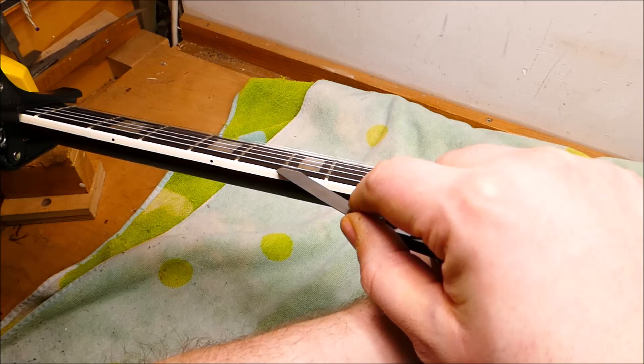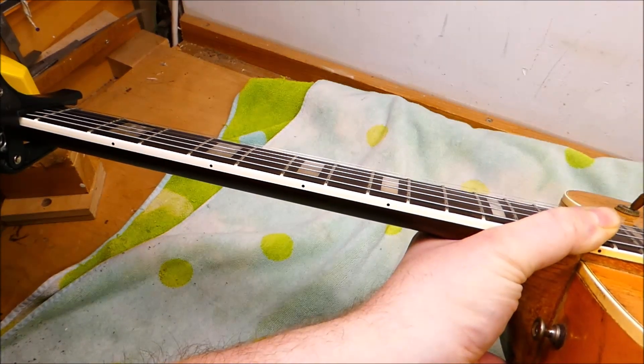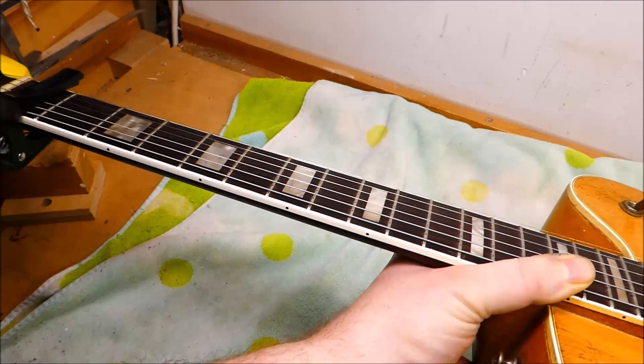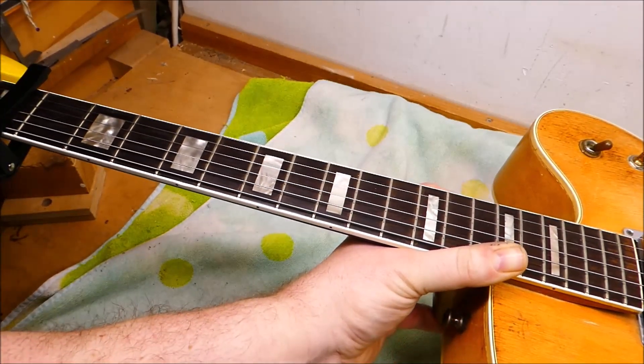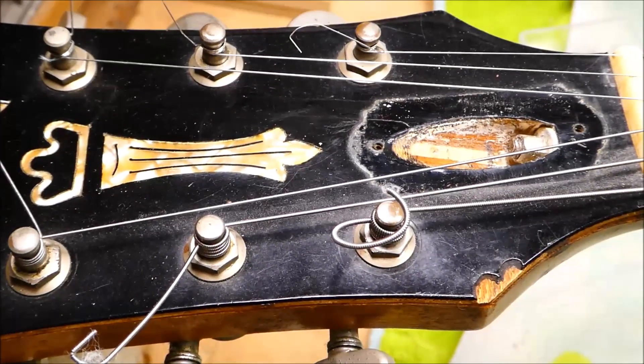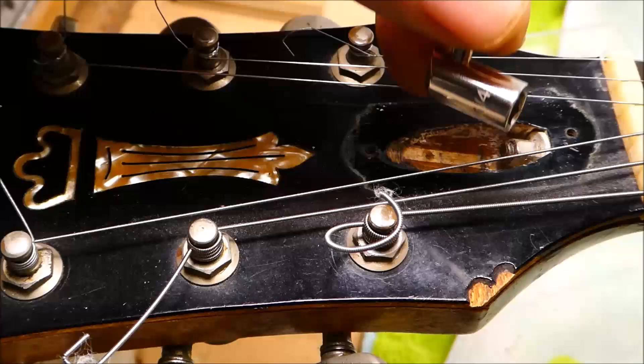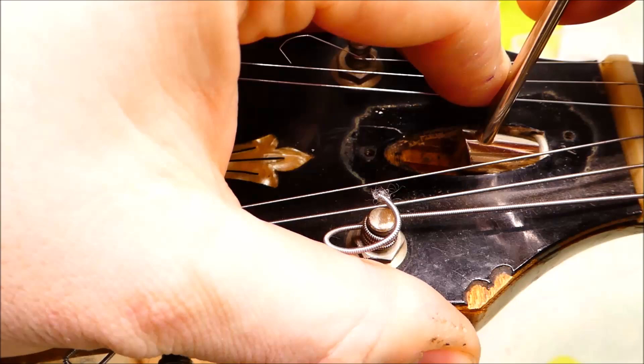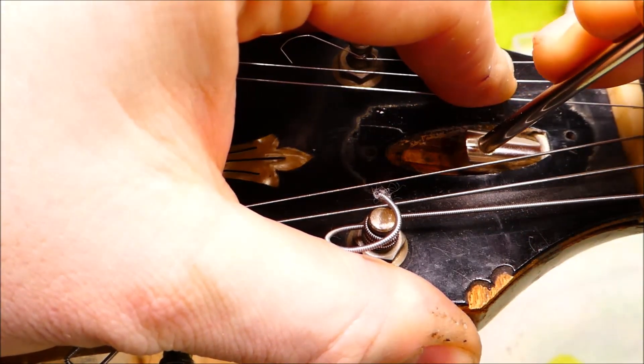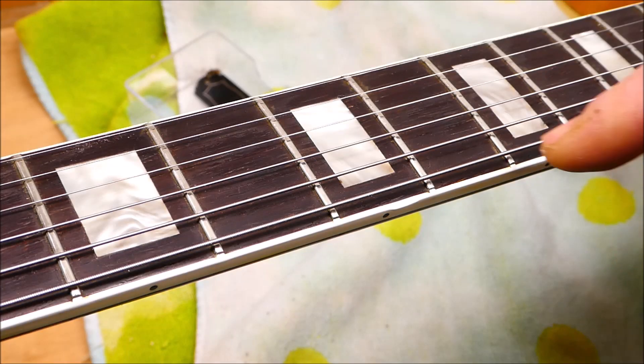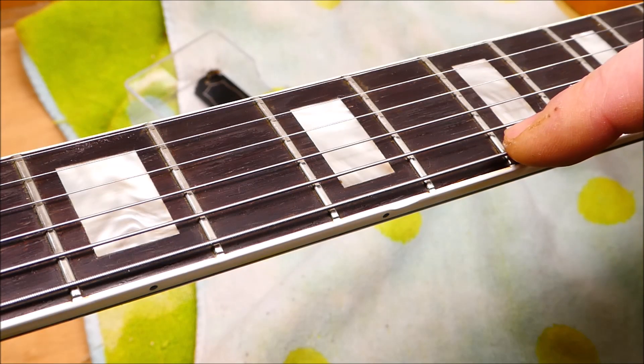The relief is a bit much. We're around 16 thousandths. So we should tighten the rod a smidge and see if we can straighten the neck out a bit. That might also lower the action slightly. This has got one of those really diminutive truss rod nuts. It's a quarter inch. Give it a little snug. Yeah, it feels kind of loose. That seems better. We're down to around eight thousandths at the sixth fret now.